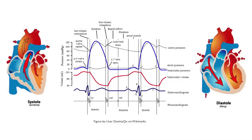Here we are looking at the entire cardiac cycle. We have this graph here that shows a number of details. To make this as easy as possible, what we're going to do is take everything and break it down one section at a time. We're talking about one complete heartbeat.